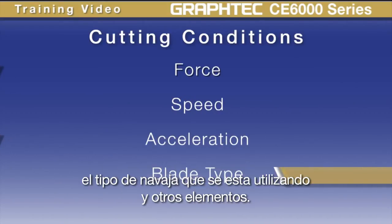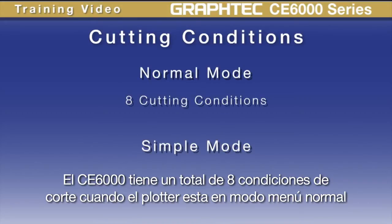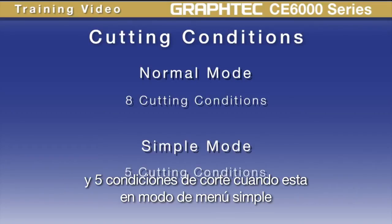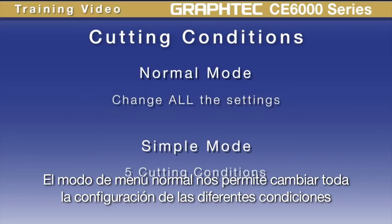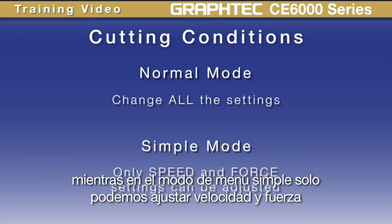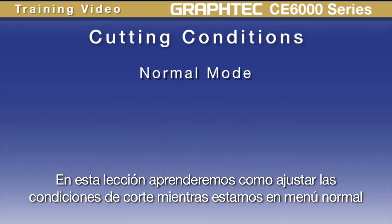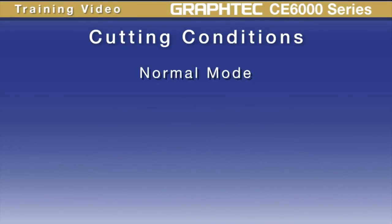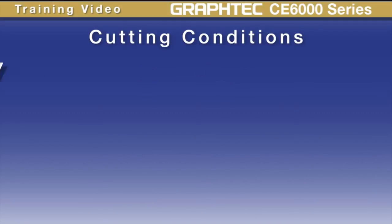The settings within a cutting condition include the force, speed, acceleration, the type of blade to be used, and other settings. The CE 6000 has a total of eight cutting conditions when the plotter is in normal menu mode, and five cutting conditions when in simple menu mode. Normal menu mode allows us to change all the settings for a condition, whereas simple menu mode allows for adjusting the speed and force. In this lesson we'll be covering how to adjust cutting conditions while in the normal menu mode.